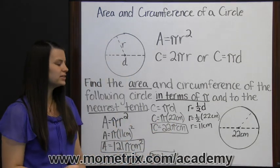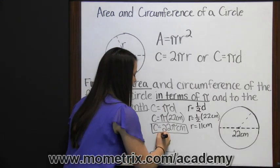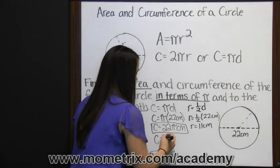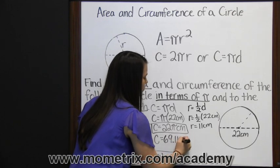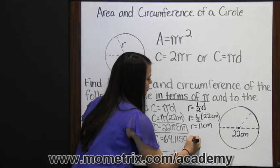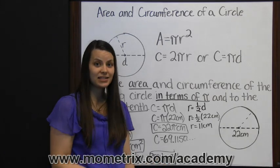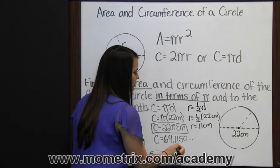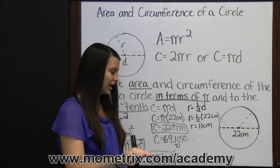To find our answer to the nearest tenth, we now need to multiply 22 times pi, so that we get circumference is 69.1150. And then we round to the tenths place. The one is in the tenths place, and the one next to it tells it to stay the same. So our circumference is 69.1 centimeters.